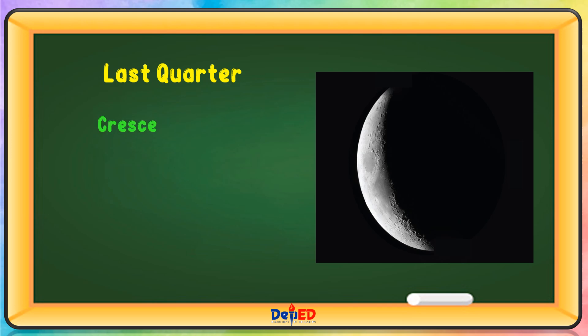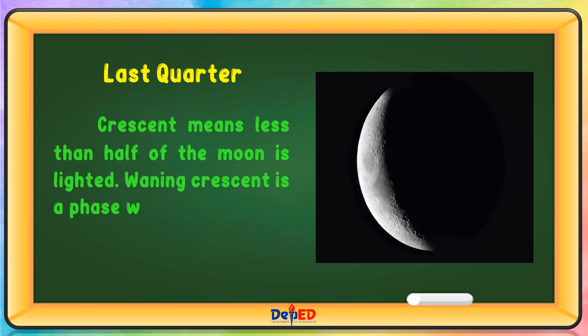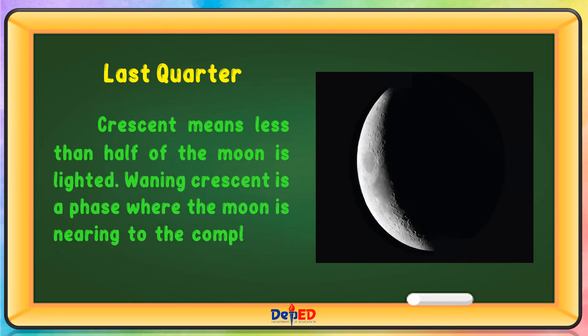Waning Crescent Moon — Crescent means less than half of the Moon is lighted. Waning Crescent is a phase where the Moon is nearing the completion of the cycle.